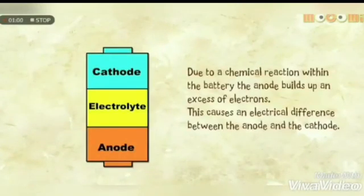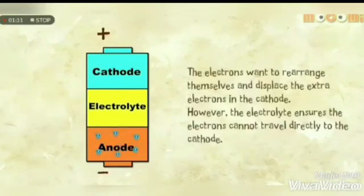Due to chemical reactions within the battery, the anode builds up an excess of electrons. This causes an electrical difference between the anode and the cathode. The electrons want to rearrange themselves and dispel the extra electrons to the cathode. However, the electrolyte ensures the electrons can't travel directly to the cathode.